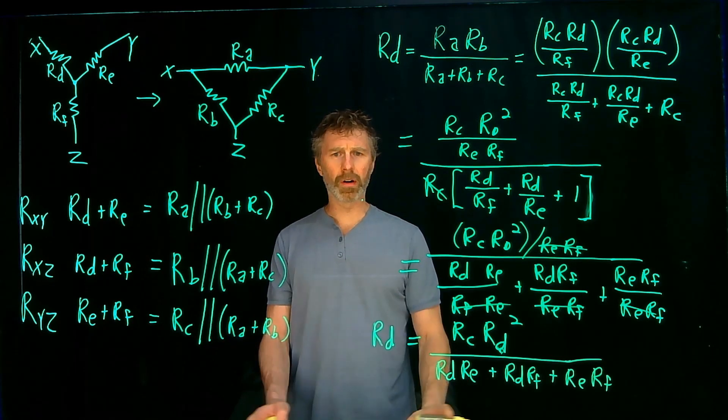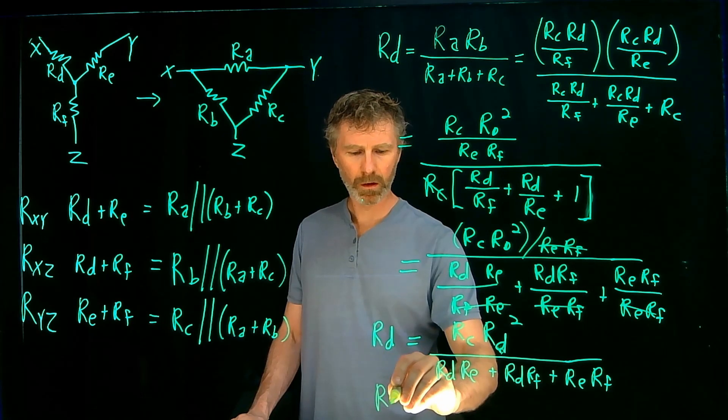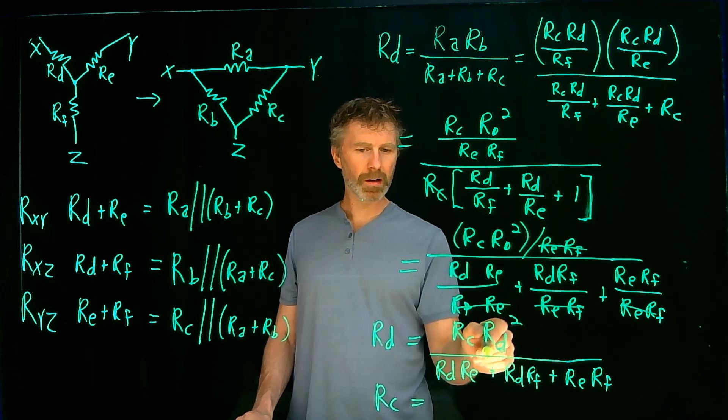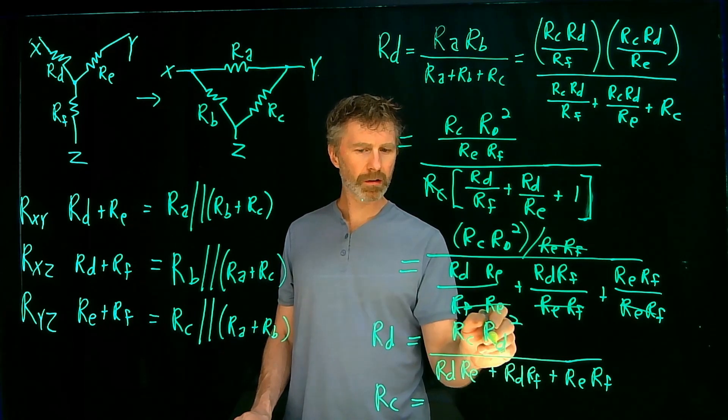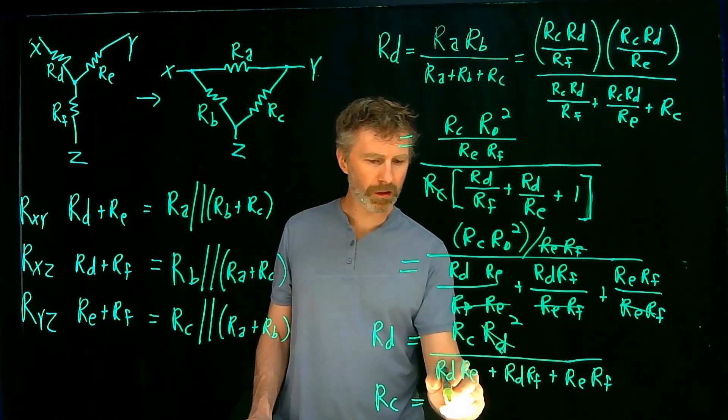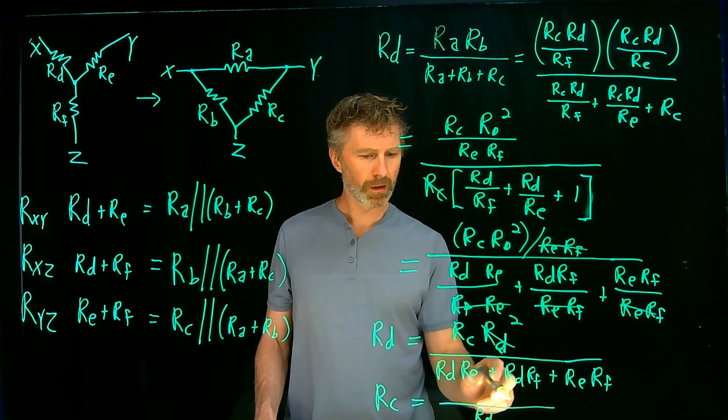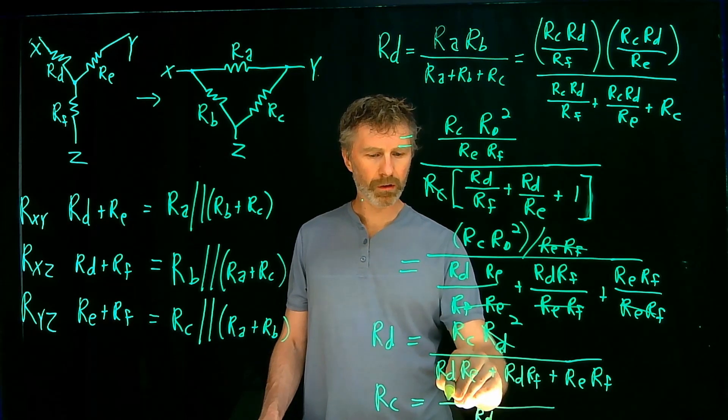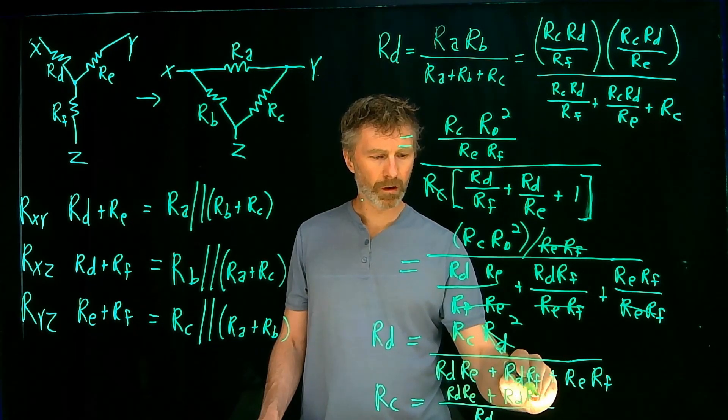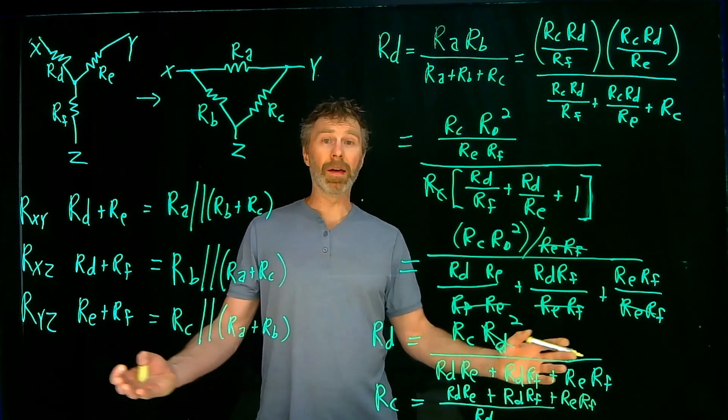Now I am trying to solve for RC. So I want to isolate RC. So I isolate RC. Then what I'm going to get is if I divide by RD squared on both sides of the equation. I'll get rid of that and I'll have one over RD on this side. So I'll have one RD left over for the denominator. And then these will go, all go to the numerator. So I've got RD RE plus RD RF plus RE RF.